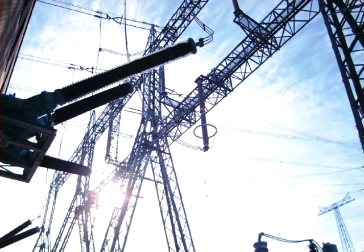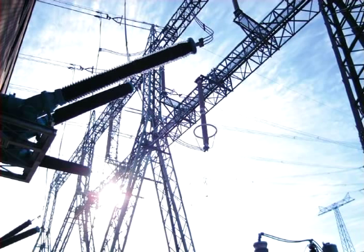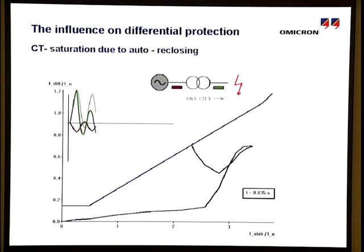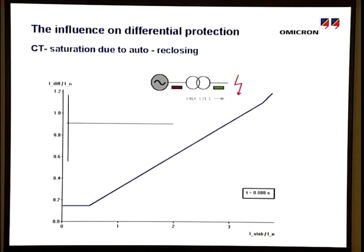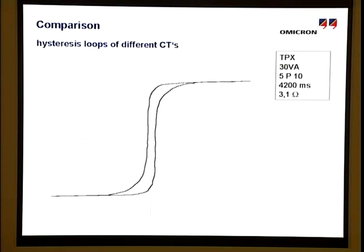Remanence — the ability to store magnetic energy — plays a role not to be neglected, especially with regard to auto-reclosing. As shown in the figure, a short circuit current of 14 kA with the first fault does not lead to CT saturation. With the unsuccessful re-closure, the CT is saturated due to remanence. If the relay behavior is also examined offline at re-closure, the simulation shows that the stabilizing characteristic is exceeded in the second area due to smaller stabilizing currents and considerably lower rise. Consequently, tripping of the differential protection is to be expected. Therefore, the iron core CT does not meet the requirements for this specific application if the tripping characteristic cannot be set to be less sensitive.